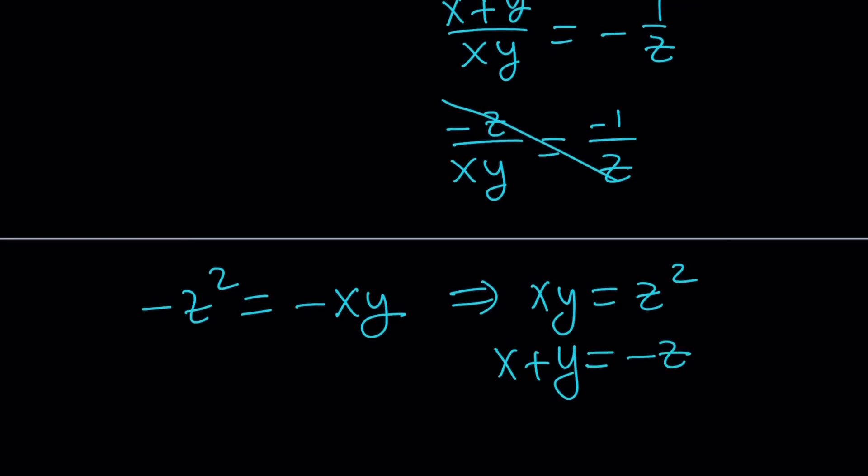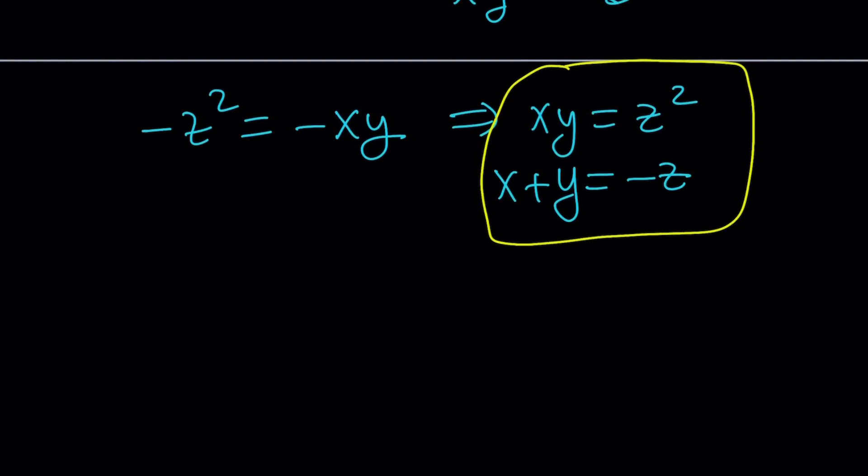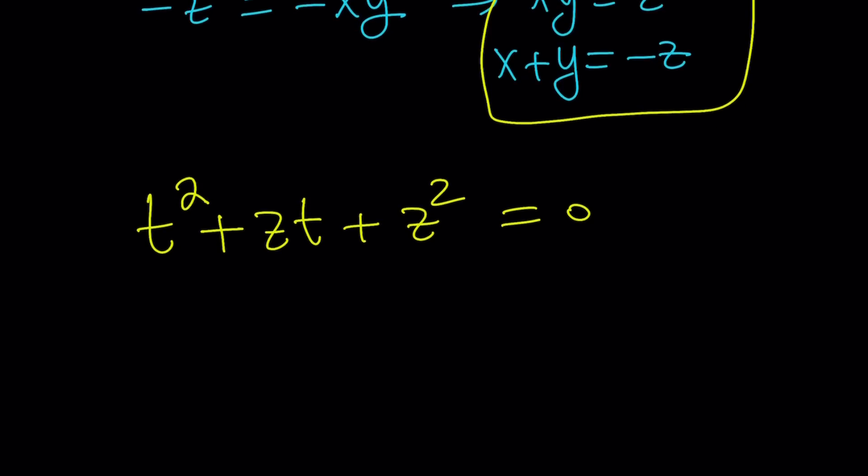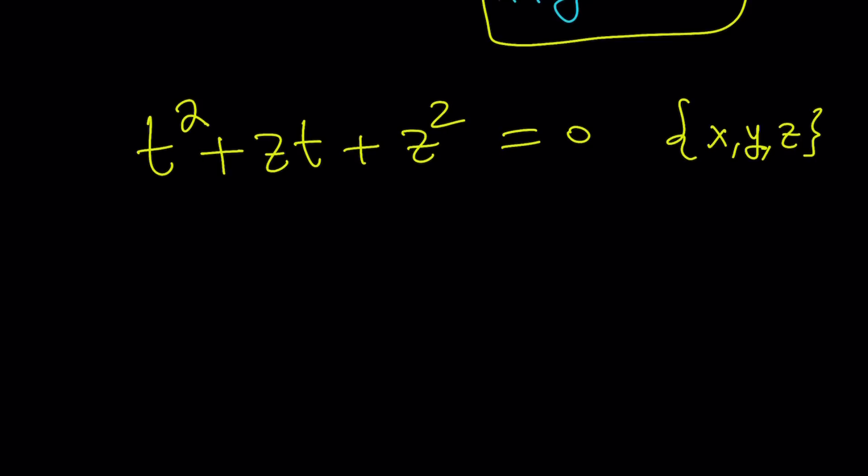I'll make up an equation, a quadratic equation, whose roots are X and Y. And obviously, Z is one of the roots as well. But using Vieta's formula or theorem, let's let T represent X, Y, Z. Okay, so T squared minus, remember the sum goes here. So it's going to be plus ZT plus Z squared equals zero. So this is the equation whose roots are X and Y. And of course, Z will be part of that too, because of symmetry. Okay. But, you know, don't worry about Z now because this is quadratic. So I don't want to confuse you.